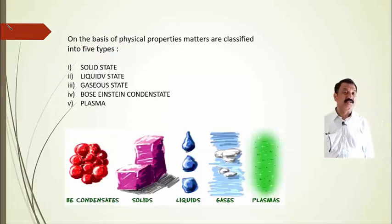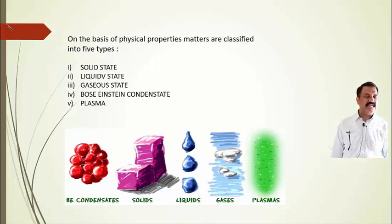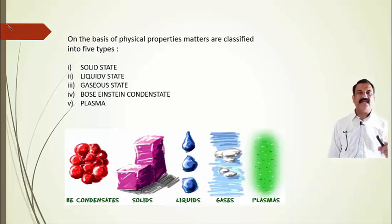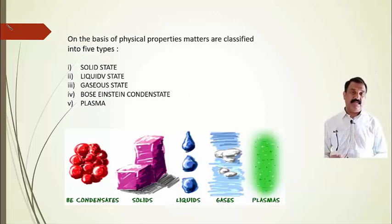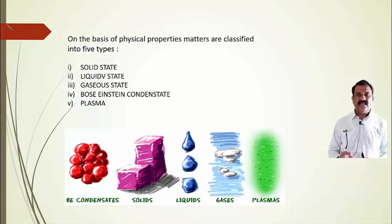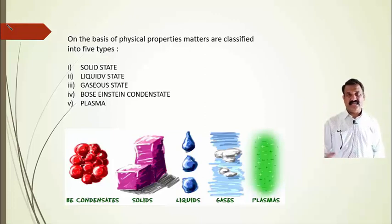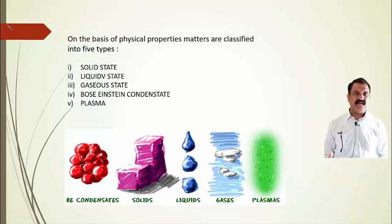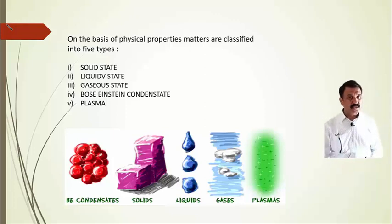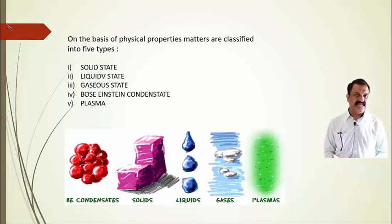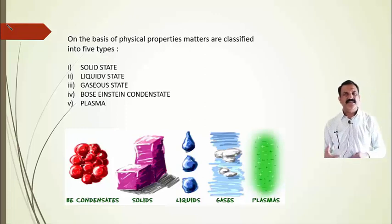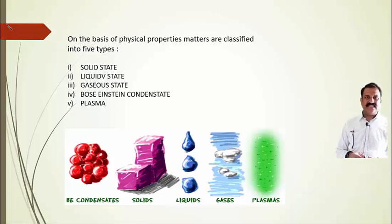Matter can be classified into different types on the basis of physical as well as chemical properties. On the basis of physical properties, matter is classified into solid state, liquid state, gaseous state, Bose-Einstein condensate, and plasma.